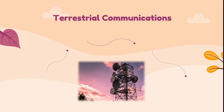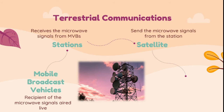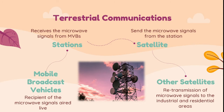Have you thought about how news reporters send news from outside the studio filming it live? The signals are sent through mobile broadcast vehicles that use microwaves. The mobile broadcast vehicles are the recipients of the microwave signals aired live. Then the stations will receive microwave signals from the MVBs. The satellites will send the microwave signals from the stations to other satellites for retransmission to industrial and residential areas.